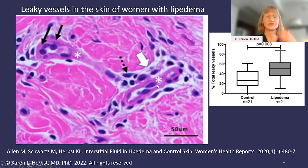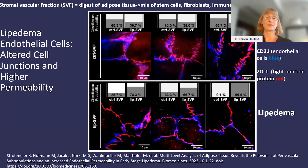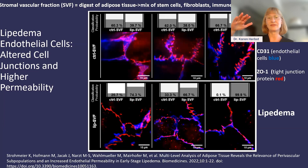A paper just out of Vienna showed some of the coolest data I've seen in a long time. They took our hypothesis about leaky vessels and set out to prove it. Using lipoaspirate — fluid from liposuction — they digested away mature fat cells, leaving immune cells, stem cells, and endothelial cells. They isolated those endothelial cells and grew them in culture, then used artificial intelligence to identify which cells made good tight junctions — a close connection between cells. One protein in that tight junction is zonulin, shown as ZO-1 in red.